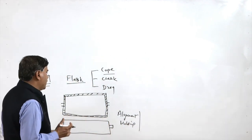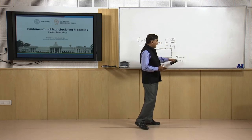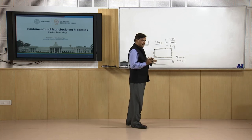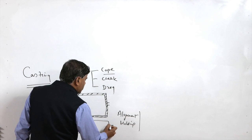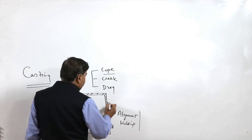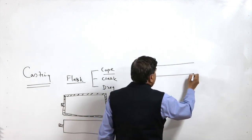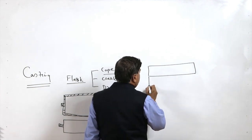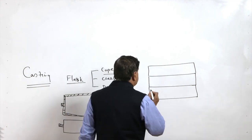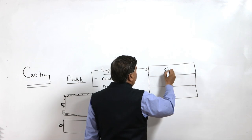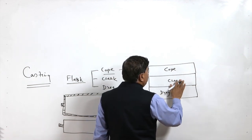When two or more flasks are used, they are kept one over the other and need to be aligned properly and held properly so that the shape of the mould can be maintained. For this purpose, slots and holes are made so that a pin can be inserted to keep them properly aligned and held. The flask at the top is called the cope, the one at the bottom is called the drag, and the one in the middle is termed the cheek.